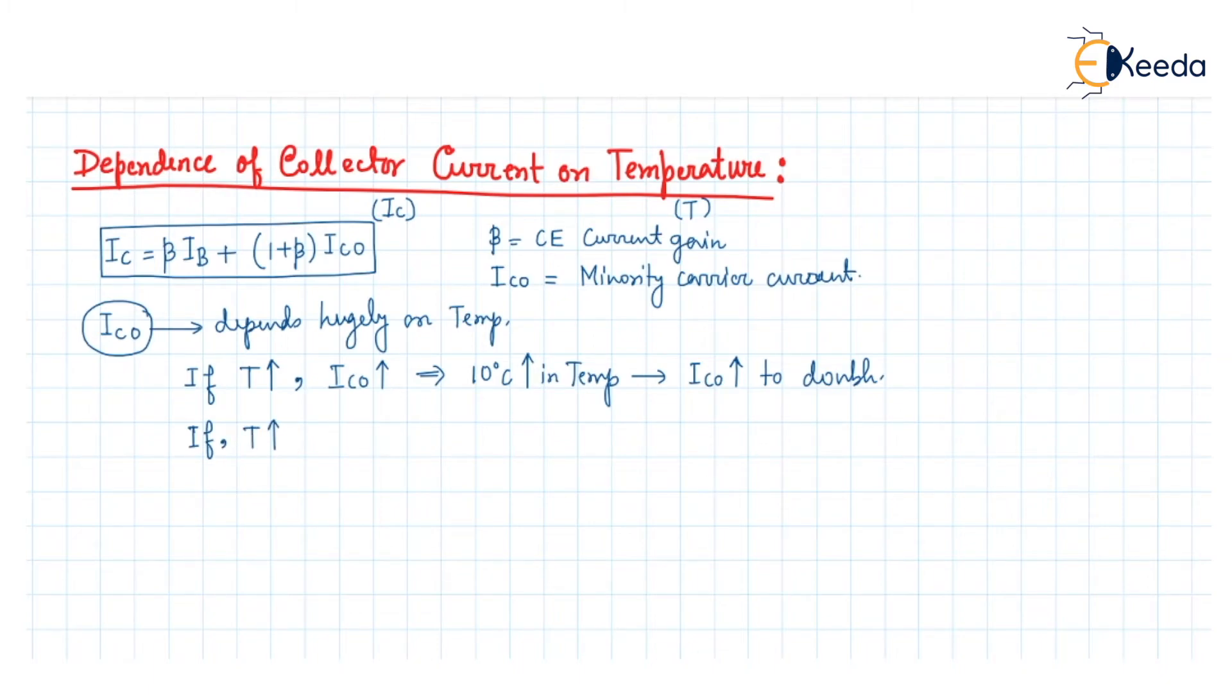If temperature increases, then the minority carrier current ICO increases, which in turn increases the collector current. So we can see that temperature can control the IC current in this way.